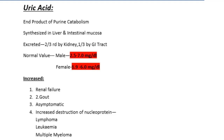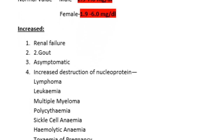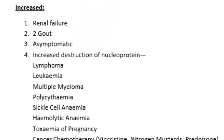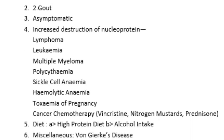Conditions where uric acid may be increased include renal failure, gout, asymptomatic hyperuricemia, and increased destruction of nucleoprotein such as in leukemia, lymphoma, multiple myeloma, and cancer chemotherapy with drugs such as vincristine.